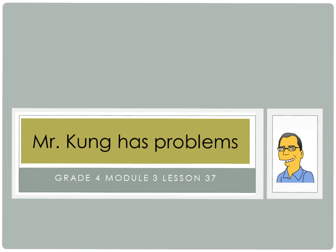Good evening and welcome to another episode of Mr. Kung Has Problems. Today we're working on Module 3, Lesson 37. We're making the transition from doing four partial products to using more of a standard algorithm, which is just two partial products, when we do two-digit by two-digit multiplication. Let's take a look at a couple of problems today that will demonstrate how we're doing that work.